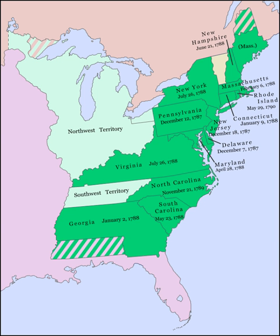Article 7 of the United States Constitution sets the number of state ratifications necessary in order for the Constitution to take effect and prescribes the method through which the states may ratify it.